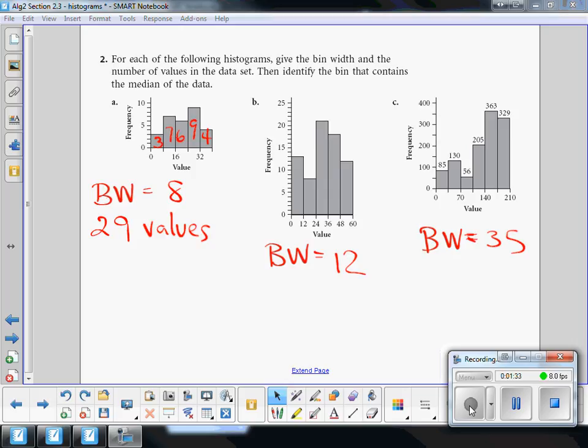Identify the bin that contains the median. If there are 29 values all in a row, right? 1, 2, 3, 4, 5, 6, 7, 8, all the way up to 29 values.